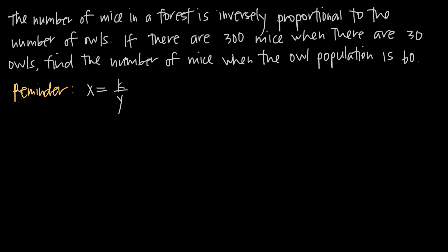Now with that being said, we've been given this problem, which says the number of mice in a forest is inversely proportional to the number of owls. So because we have inversely proportional, we know we're going to be using this formula. If there are 300 mice when there are 30 owls, find the number of mice when the owl population is 60.